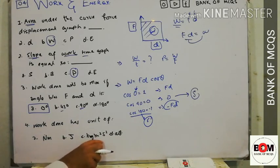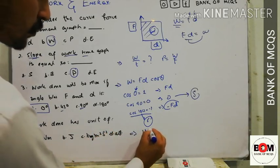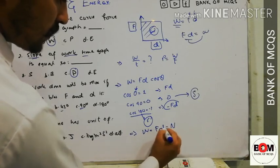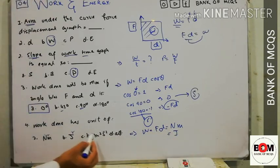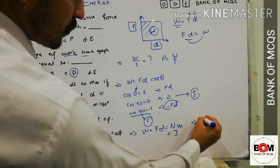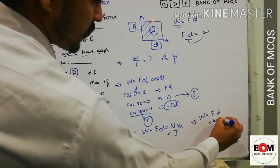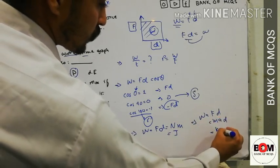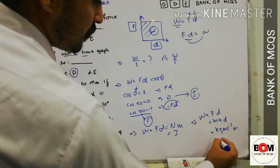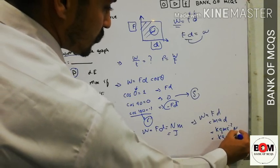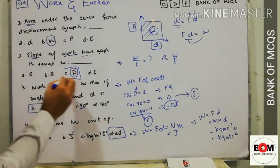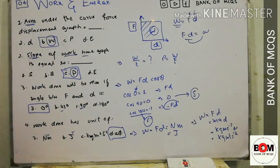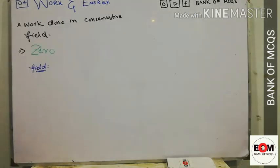MCQ on units of work: W = F×d, so the unit of F is Newton and of d is metre, giving Newton·metre. Newton·metre is also called Joule. We can also write F = ma·d where unit of m is kg, a is m/s², and d is metre, giving kg·m²/s². So the correct answer is option D — all of these.